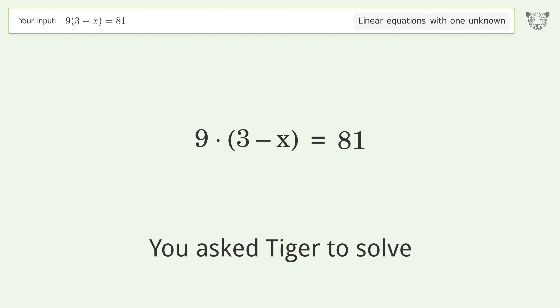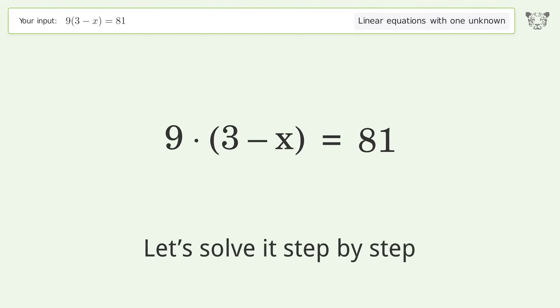You ask Tiger to solve this. This deals with linear equations with one unknown. The final result is x equals negative 6. Let's solve it step by step. Simplify the expression. Expand the parentheses.